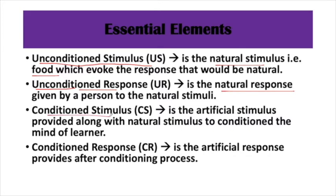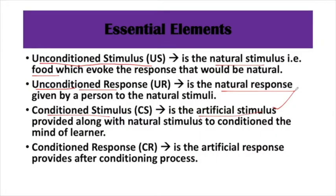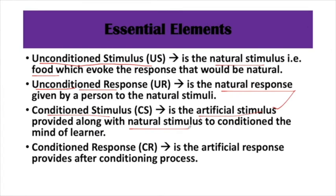The next term is conditioned stimulus, which means artificial stimulus. The natural stimulus was food — looking at food caused saliva to be produced. But an artificial stimulus was also given: the bell was rung every time food came, so the dog associated the bell with food. So the artificial stimulus was the bell. The conditioned response is the artificial response — the alertness or salivation to the bell alone.